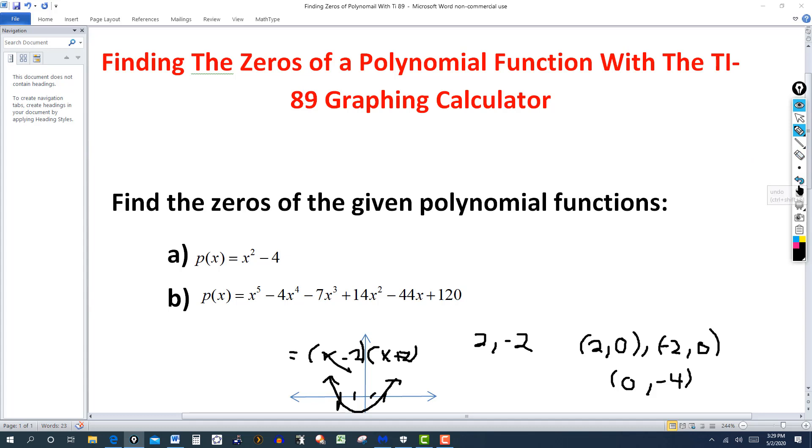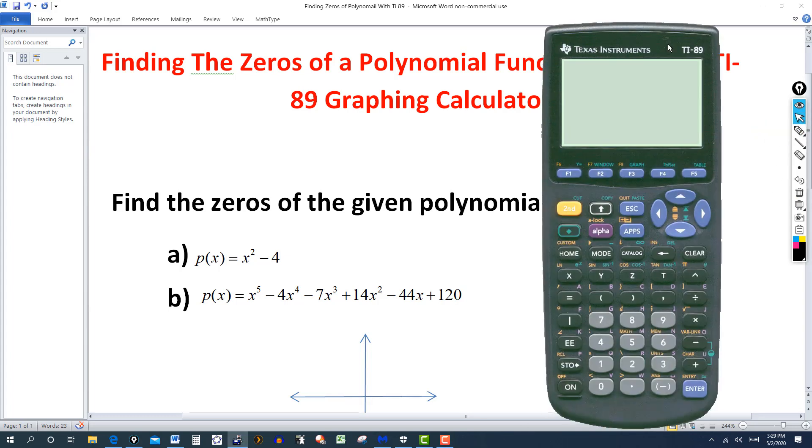So let's go ahead and clear this. Now, let's go ahead and use the calculator. So, if you can easily factor the polynomial function, you can easily find the zero. Sometimes, it's not that easy to factor, like the second one. But on the graphing calculator, we'll do the first one now, on the calculator.